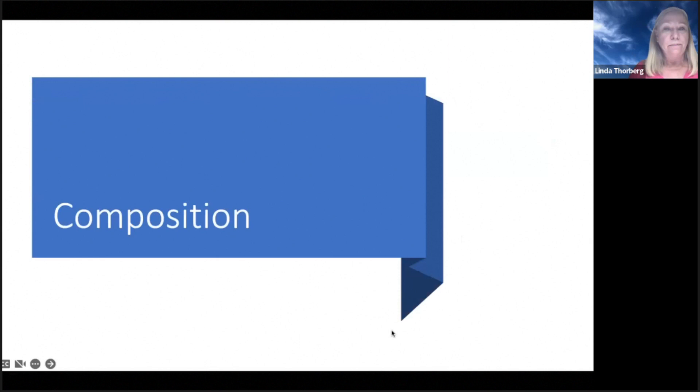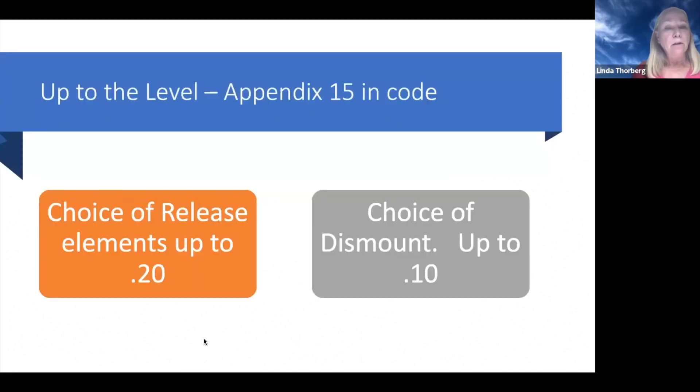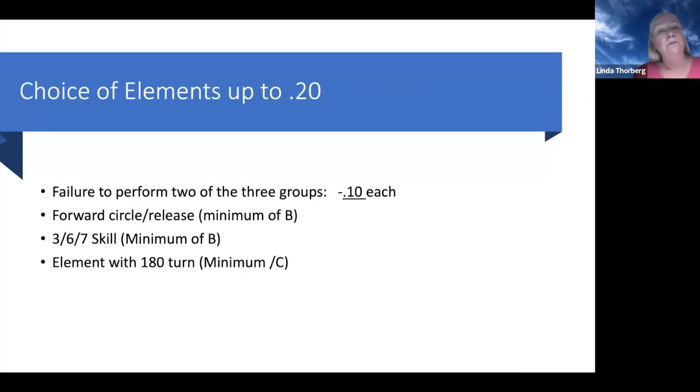A couple things about composition on bars. On bars, we only have two areas that we look at. One is the choice of the release elements is up to two tenths. What do you have to have to get no deduction? Two D's. Two D's or better releases. And then everything else works its way down to or up to the two tenths. We also have choice of the dismount of up to one tenth. So if anybody has a D or higher dismount, they don't have a problem. If anybody has a D skill into a C dismount, no problem. If it's less than that, then we start to take deductions.